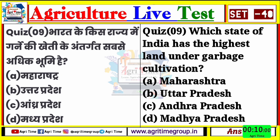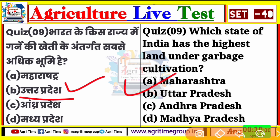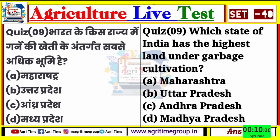Quiz number 9 का right answer होगा option number B। जिन्होंने B comment किया, उनका answer बिल्कुल right है। भारत में जो गन्ना है, इसके क्षेत्र सबसे अधिक कहाँ होती है - उत्तरप्रदेश में सबसे ज़्यादे क्षेत्र में लगाया जाता है।